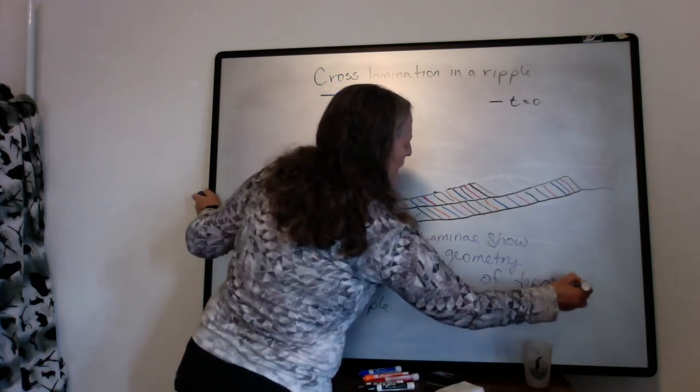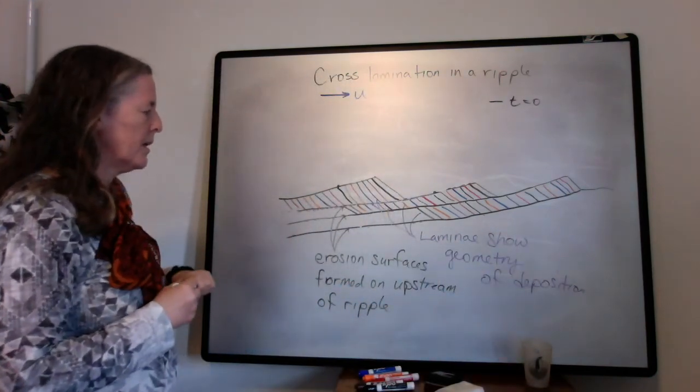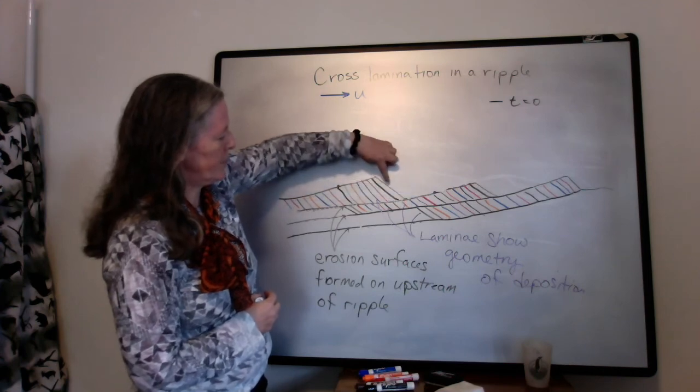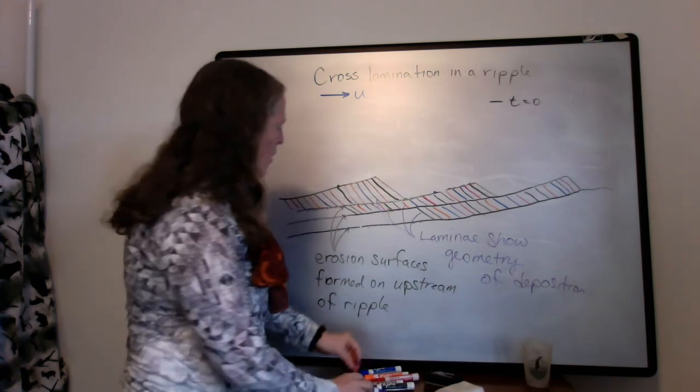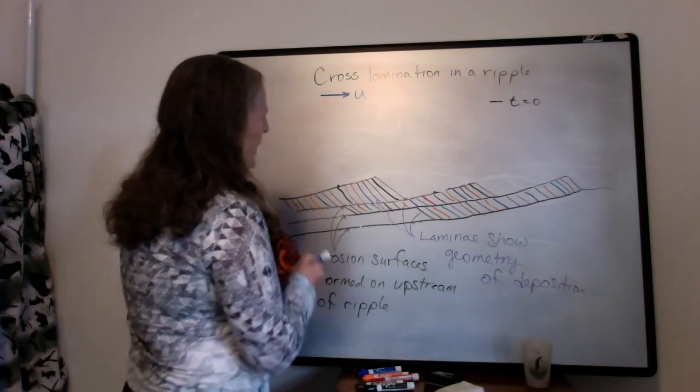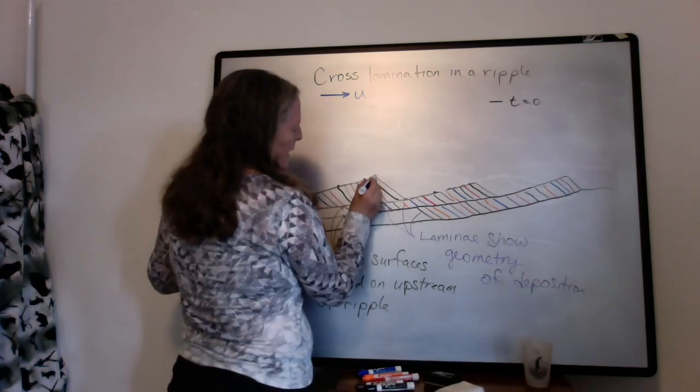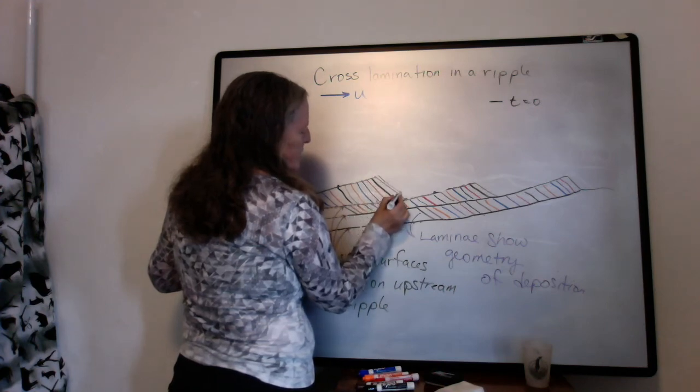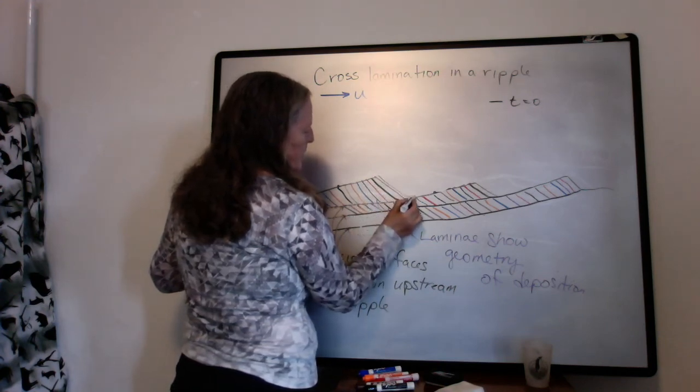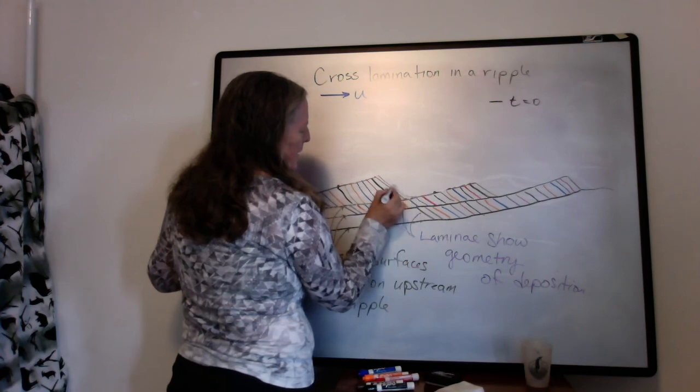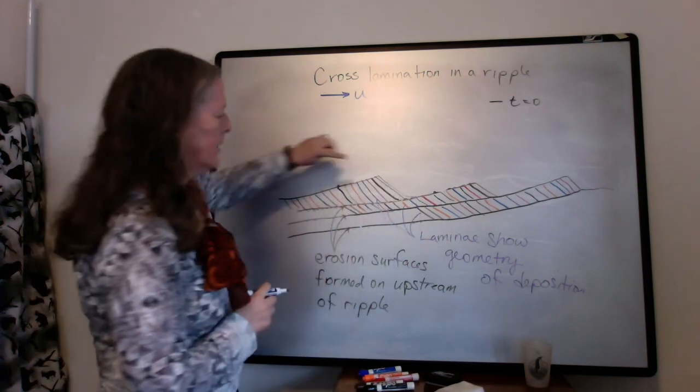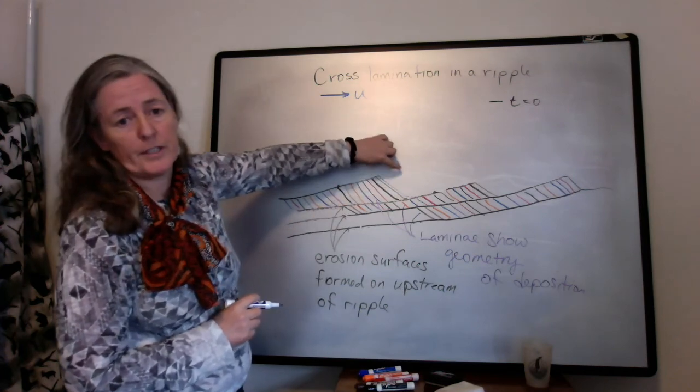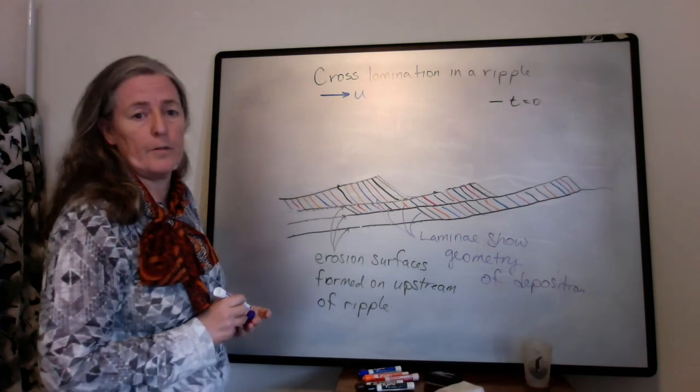They have some thickness to them. And the geometry that you see in the layers depends on the geometry of the surface. When a layer gets deposited on a surface, it roughly parallels the surface. Sometimes it will pinch out, something like that. But the geometry of the layer represents the geometry of the surface when the ripple is forming.